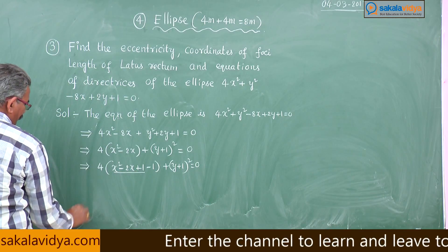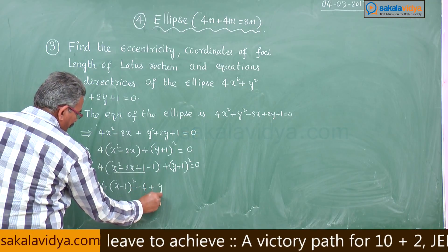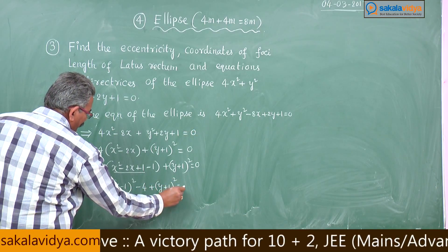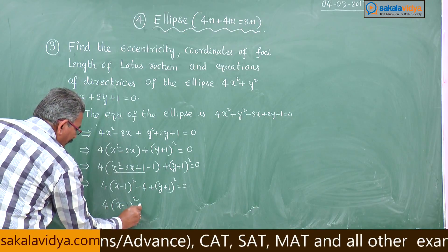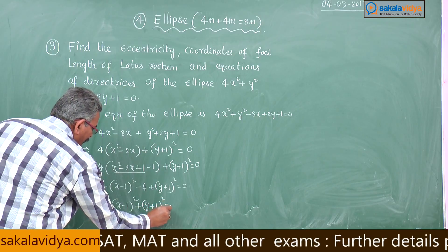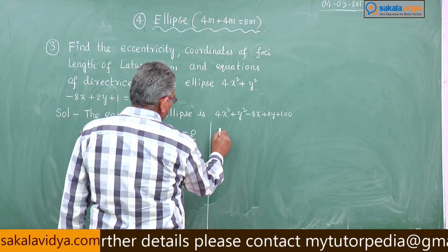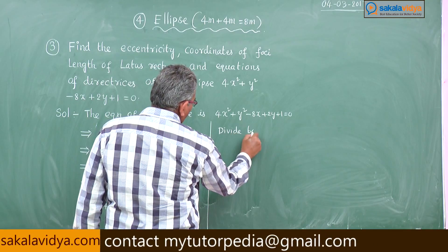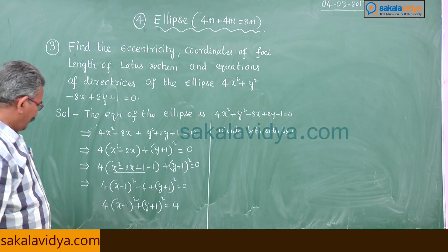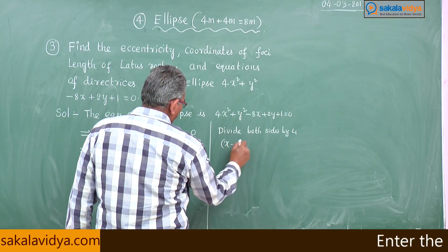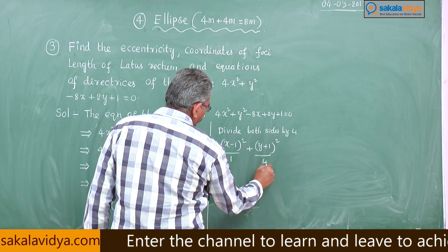This gives us 4(x² - 2x + 1 - 1) + (y + 1)² = 0, which is 4(x - 1)² - 4 + (y + 1)² = 0. Rearranging: 4(x - 1)² + (y + 1)² = 4. Now divide both sides by 4.